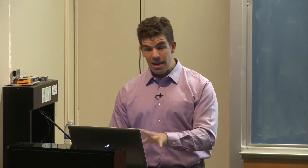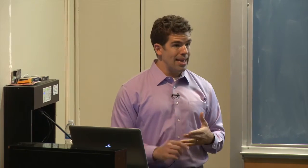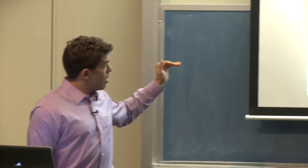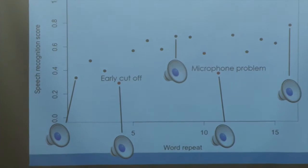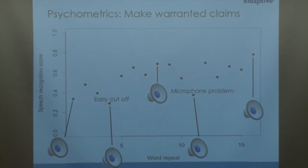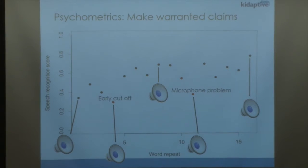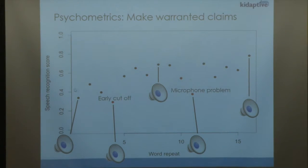On the psychometric side, we want to make sure all claims about a kid's progress are fully warranted. This is an example of a child's accuracy when speaking a particular word - in this case, 'question.' We can see an upward trend, but the ones marked in red are where something is clearly wrong. We've been listening to the audio files to understand what kinds of acoustical issues we're dealing with.